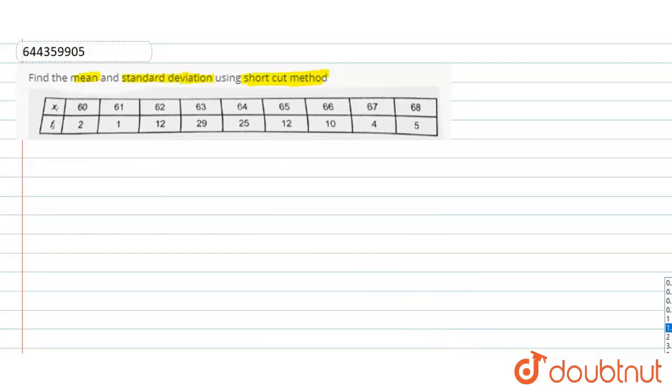So first of all I need xi, then the column of fi, then the column of yi. Yi is the deviation about assumed mean, that is xi minus assumed mean divided by h, where a is the assumed mean and h is the class size. Next we need to calculate the value of